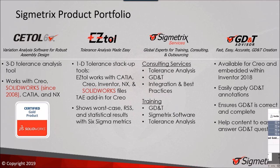Sigmetrics has been around since 1999 — we're celebrating our 20th anniversary in a few weeks. We have several products in our portfolio. Our flagship product is CETOL Six Sigma, a full 3D tolerance analysis solution that works directly with your CAD geometry and supports multiple CAD systems. As Nicole noted, we are a certified gold partner product — we are the only one in the realm of 3D analysis that has that certified gold designation.